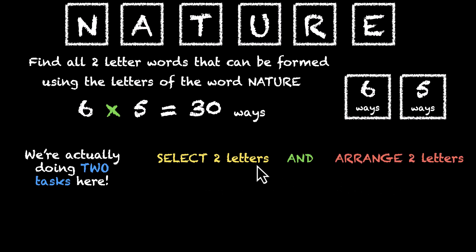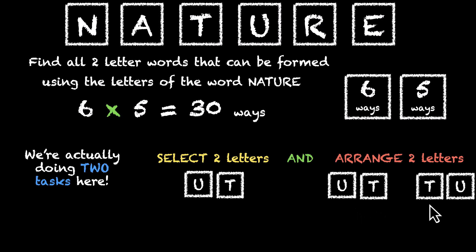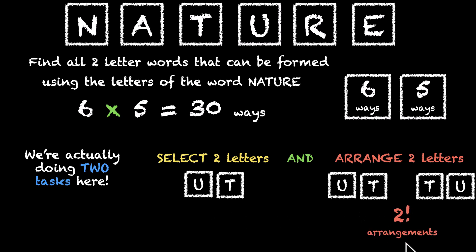For example, suppose we select these two letters, u and t. In how many ways can we arrange them? We can have 'ut' as our two-letter word, or we can have 'tu' as our two-letter word. And we know that if we have two distinct letters, we can arrange them in two factorial ways. So for every selection, for every combination of two letters, we have two factorial arrangements.